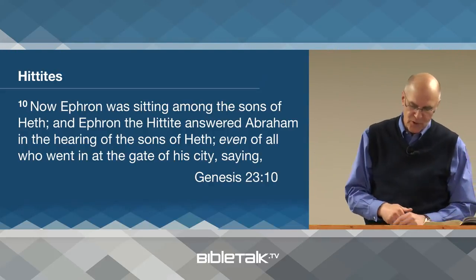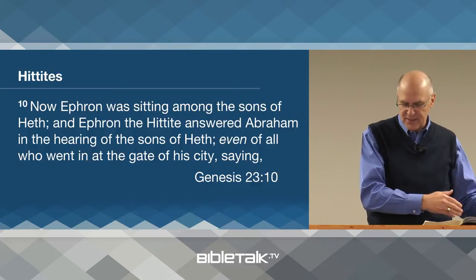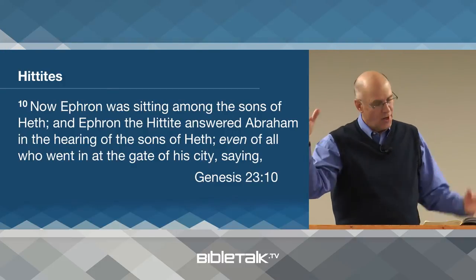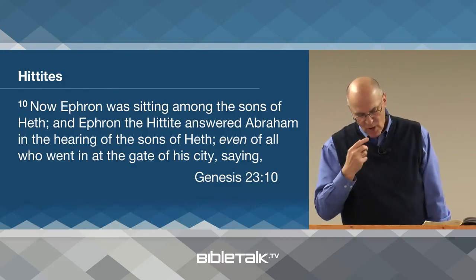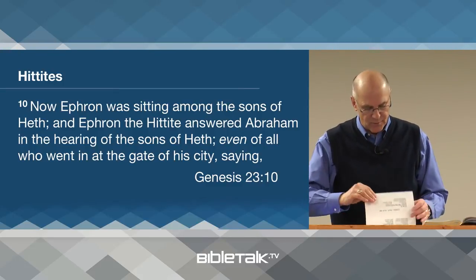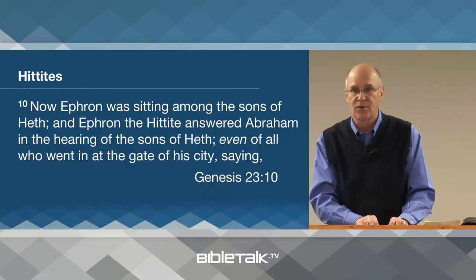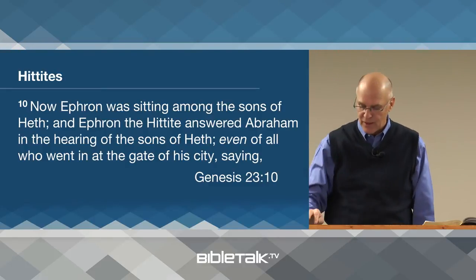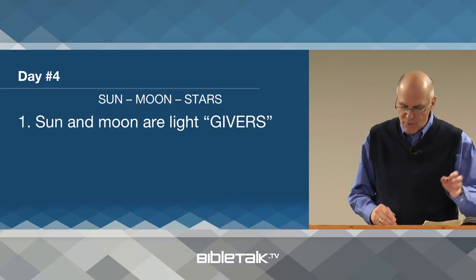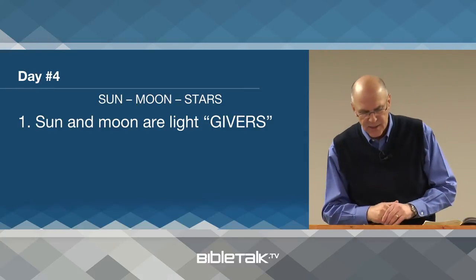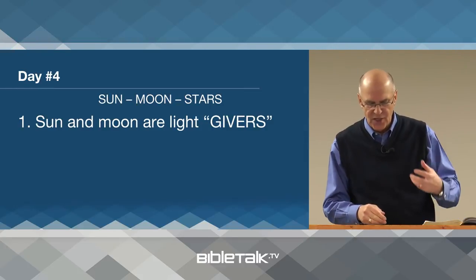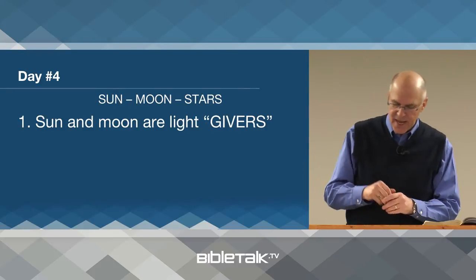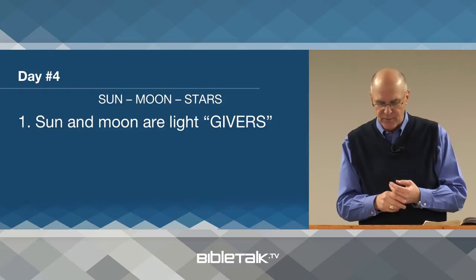Getting back to the creation of the lights — these lights were placed in the expanse of the heavens, meaning in this context out in space, not our atmosphere. I want you to note some interesting features of this part of the creation. He created light, and now he's creating the lights and placing them in the expanse above the atmosphere. First of all, both the sun and the moon were light givers, but not light generators — in other words, the sun generates light and the moon reflects it. The idea is that the earth is the object of God's attention, and these two bodies directly serve God's primary purpose with the earth.